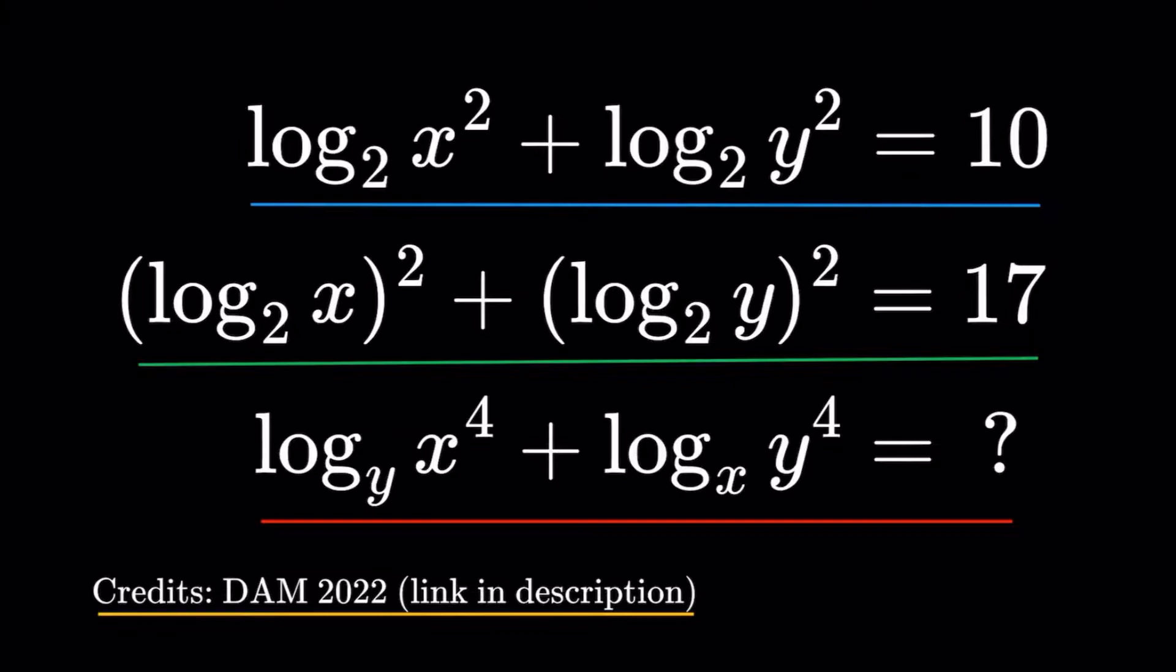We have a system of equations of logarithms. Logarithm of x squared with base 2 plus logarithm of y squared with base 2, that's equal to 10. The square of the logarithm of x with base 2 plus the square of the logarithm of y with base 2, that's equal to 17. We're asked the value of logarithm of x to the 4th with base y plus logarithm of y to the 4th with base x.